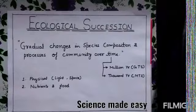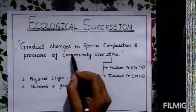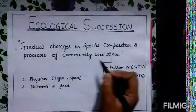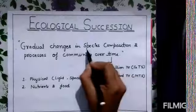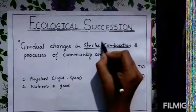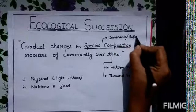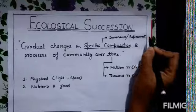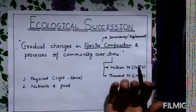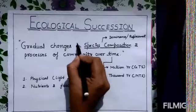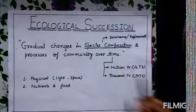Our topic is ecological succession, which comes under ecological principles. It is generally the gradual changes occurring in the species composition and in the processes of community over a period of time. This whole process is known as succession — the gradual changes occurring in the community and species composition, whether it leads towards the dominance of any species in a particular area or the replacement of species from any area.